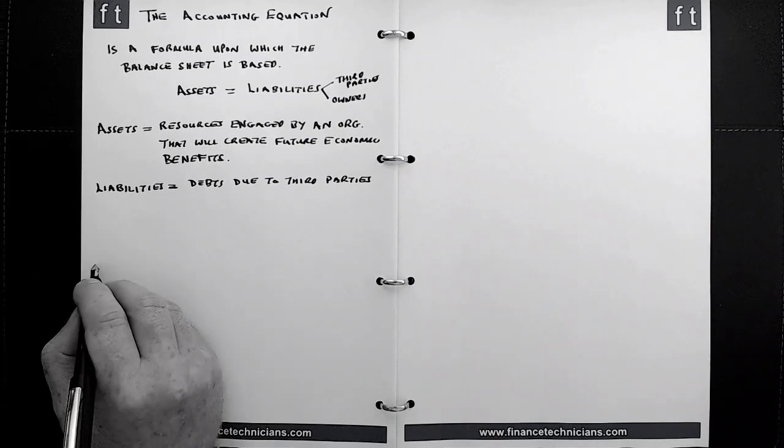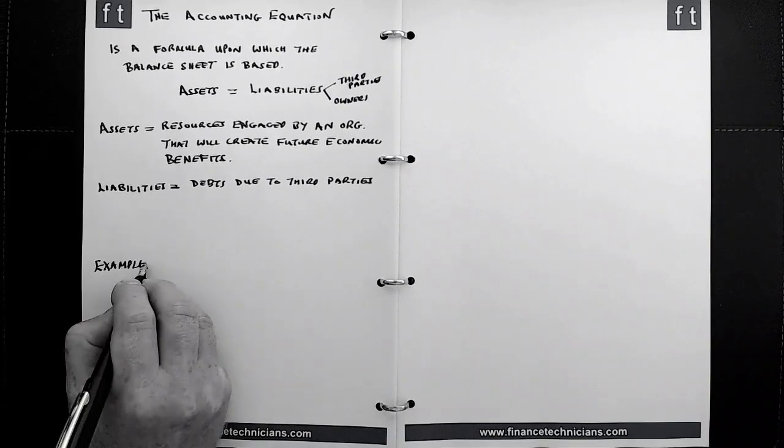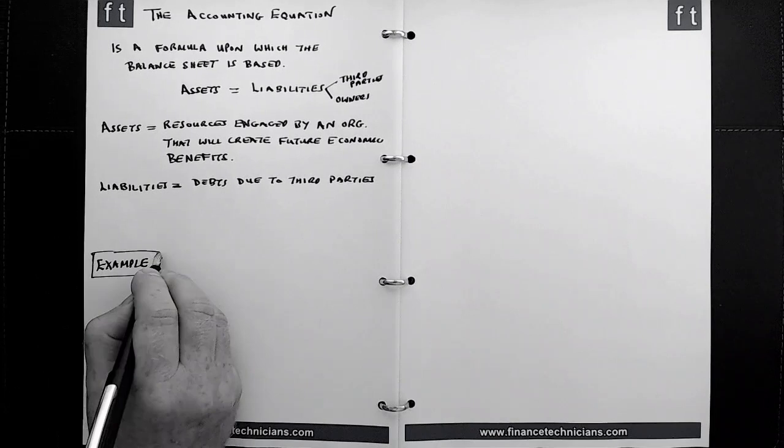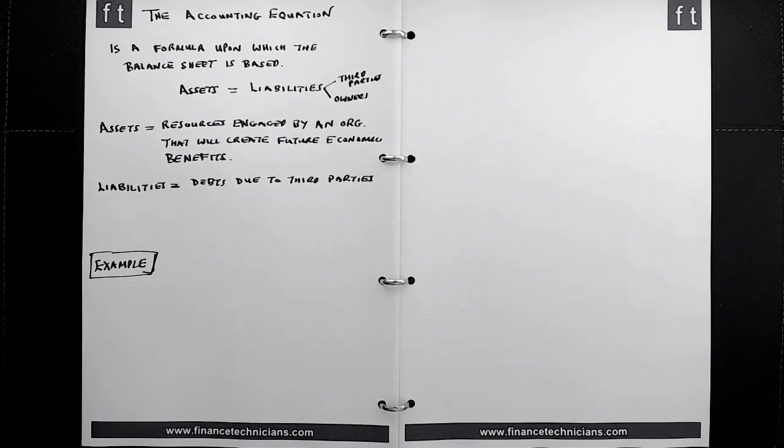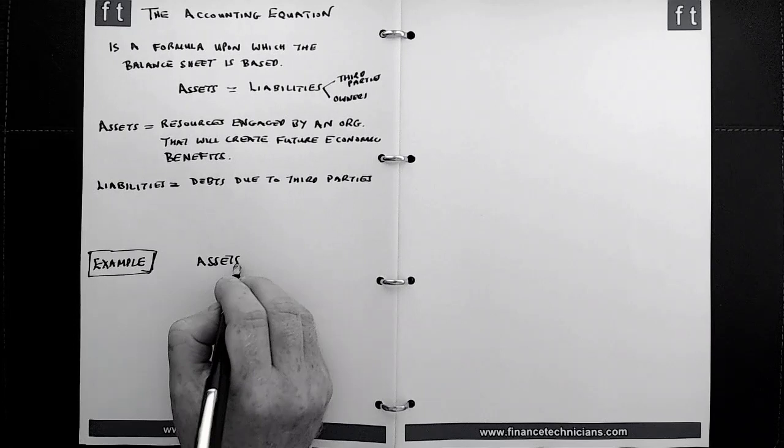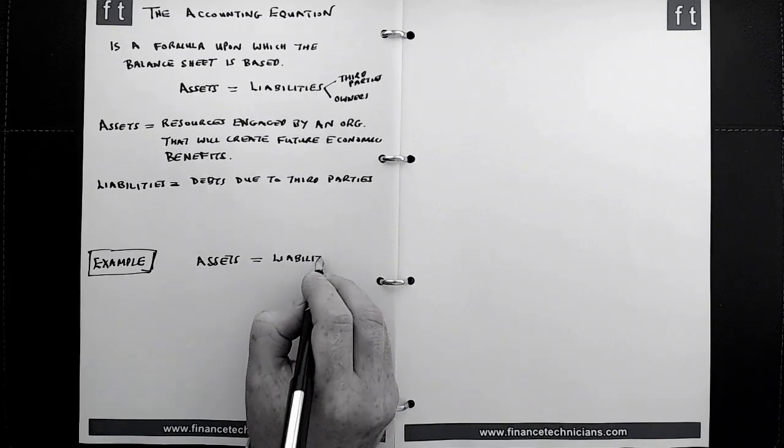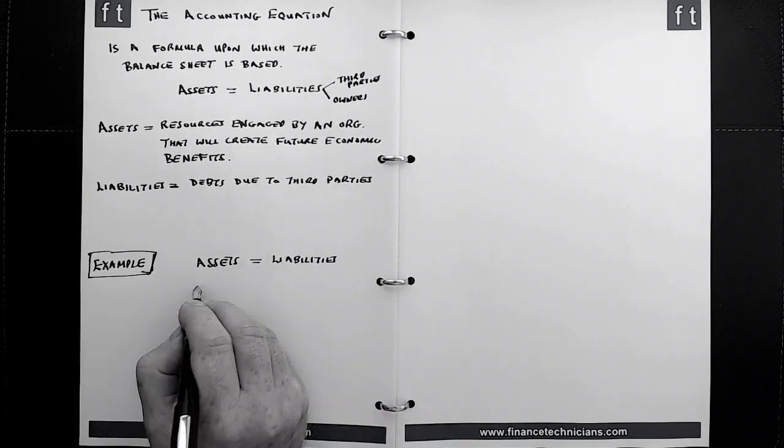Let's have a little look at an example to delve into this just a little bit deeper. We're going to have a look at a very simple example for starters that might be easier for you to relate to. Let's look at the formula. The formula says that assets must equal liabilities.